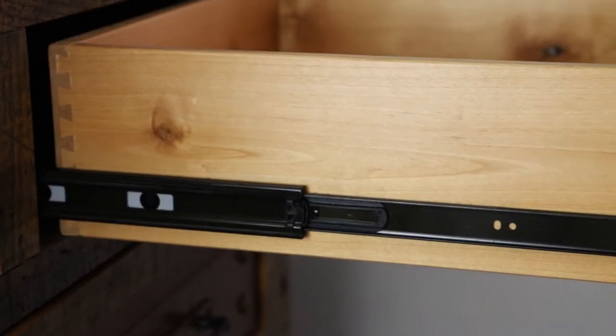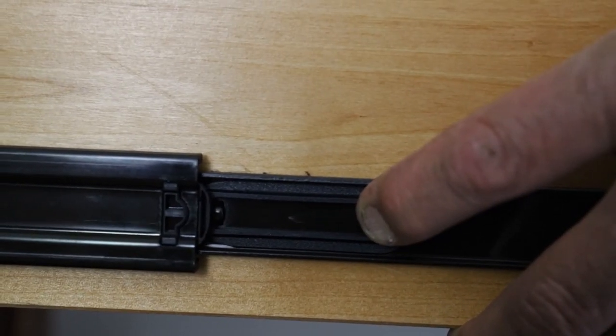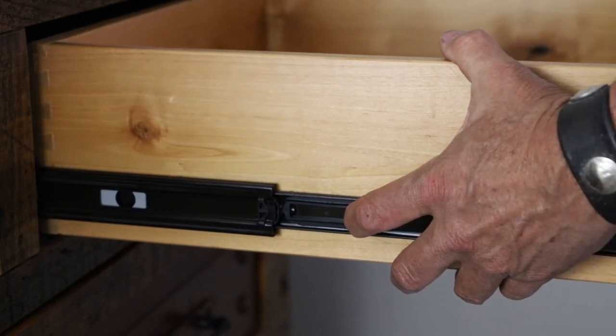In this case, on this piece, these are full extension ball bearing slides and there's a technique to get them out. It's really simple. You just pull on the little levers right here on both sides, the drawer slides right out.